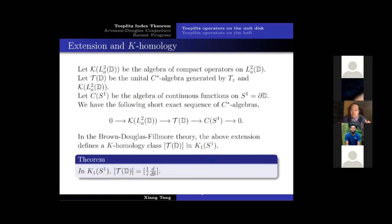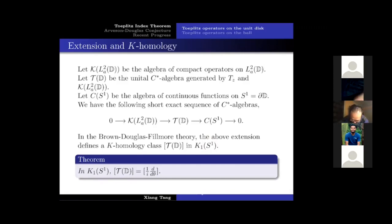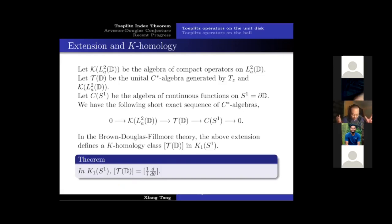The K-homology class can be identified geometrically. On the circle, the interesting differential operator is the differentiation operator. The K-homology formulation of the classical Toeplitz index theorem says that this extension class equals the K-extension class defined by the Dirac operator — the self-adjoint Dirac operator — which is the differential operator approach to the K-homology class.